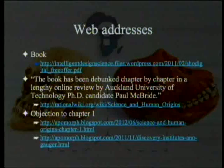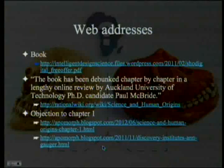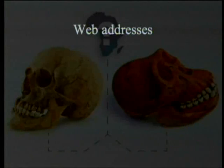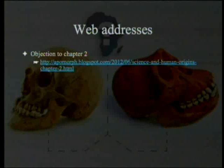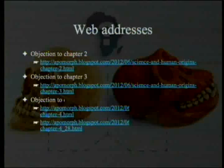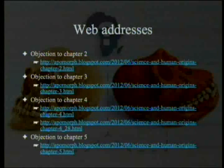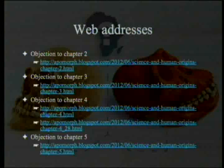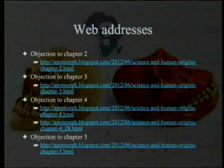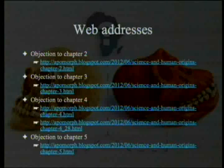The objections to chapter 1: there is the direct objection, and then another one we'll come to because it's going to be important in the logic. There are the websites, and then also the objection to chapter 2 — those are the ones we'll be covering today. There are also objections to chapters 3, 4, and 5, so those who want to read ahead for next week can do so. These are all in the email I sent as well.